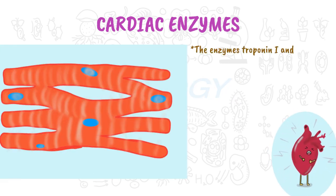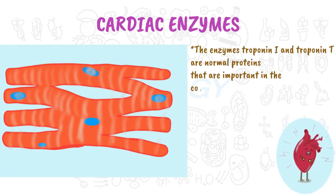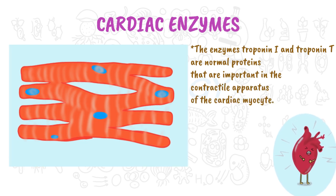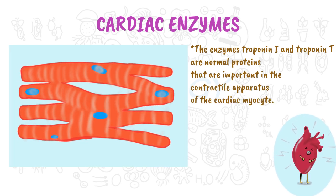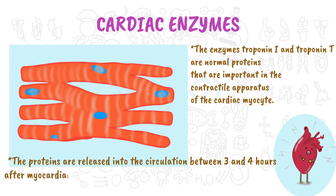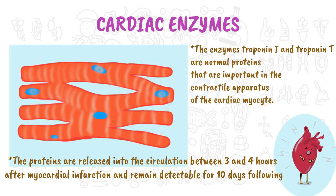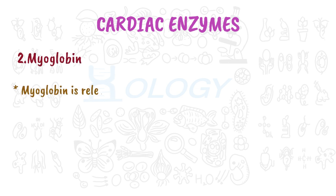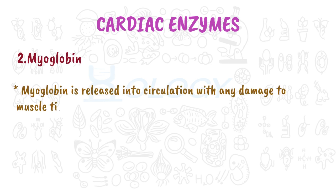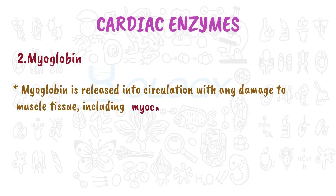Troponin I and troponin T are normal proteins important in the contractile apparatus of the cardiac myocyte. These proteins are released into circulation between three and four hours after myocardial infarction and remain detectable for up to 10 days. Following myocardial injury, myoglobin is also released into circulation with any damage to muscle tissue, including myocardial necrosis.